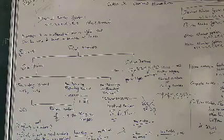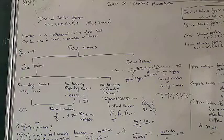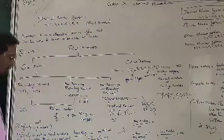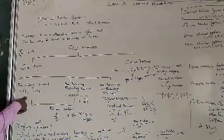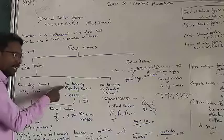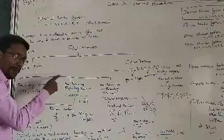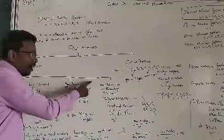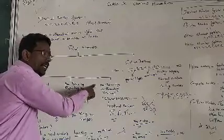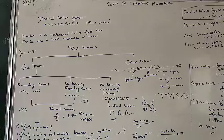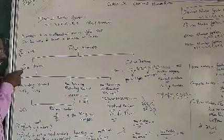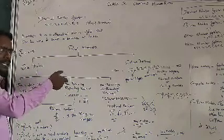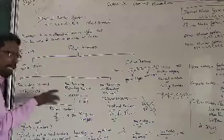When it comes to decimal numbers, they are divided into three concepts: terminating decimals, non-terminating repeating decimals, and non-terminating non-repeating decimals. We will see what terminating and non-terminating mean, then we will go in depth.